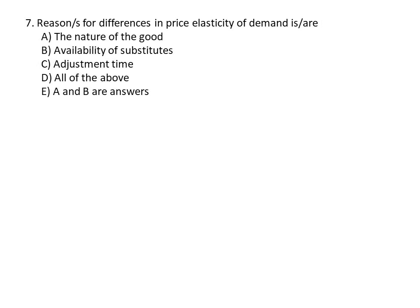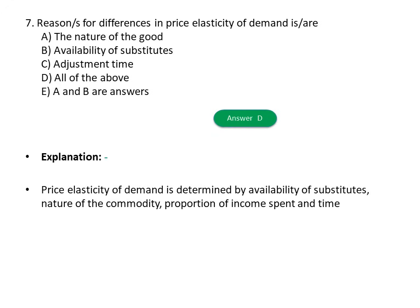Question seven: Reasons for differences in price elasticity of demand include: A) Nature of goods, B) Availability of substitutes, C) Adjustment time, D) All of the above, E) A and B. The answer is D, all of the above. Explanation: The price elasticity of demand is determined by the availability of substitutes, nature of commodity, proportion of income spent, and time.